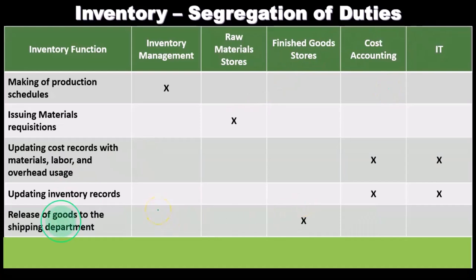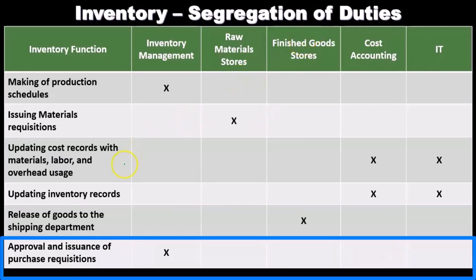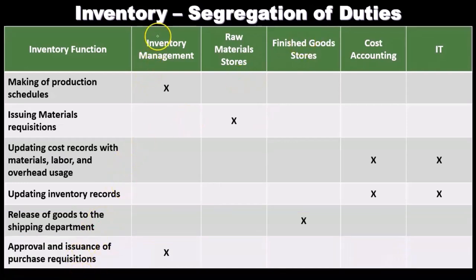The release of goods to the shipping department is handled by finished goods stores — a separate location. Finally, the approval and issuance of the purchase requisition is done within inventory management.